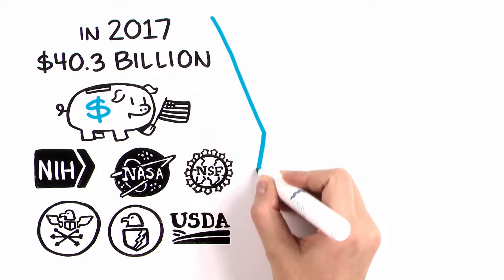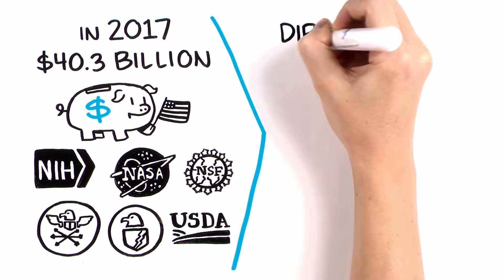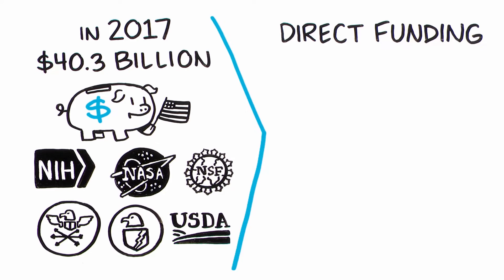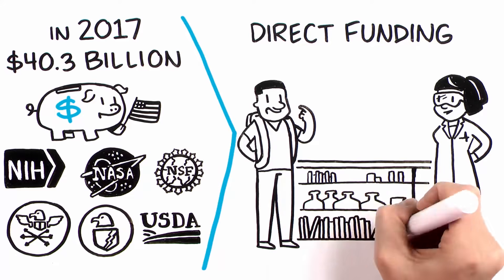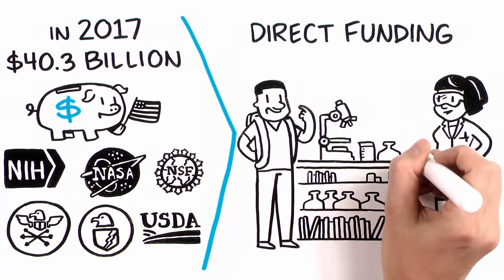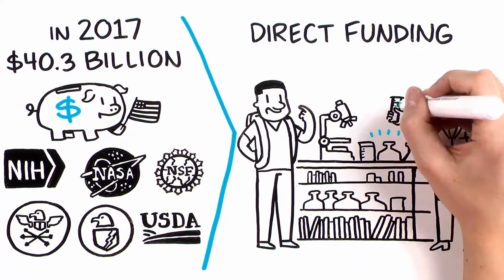This funding comes in two forms. The first is direct funding. Direct funding pays for scientists, students, and other research personnel's salaries, supplies, and equipment, and other costs associated with conducting and sharing research.